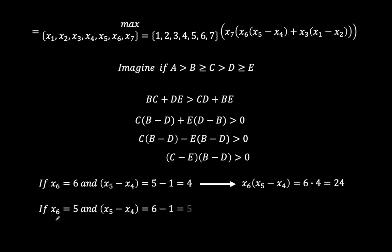Then what about if we say x6 is 5, and so we have x5 minus x4 be 6 minus 1, which is 5. So 25 is greater than 24, so we would go for this lower combination.